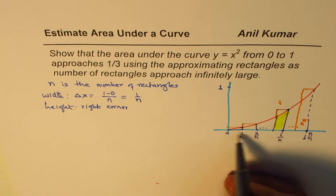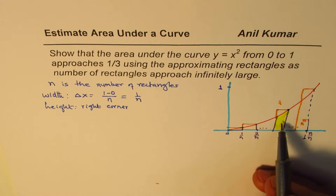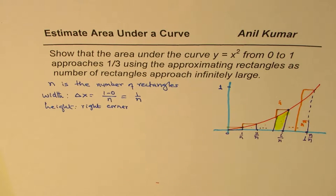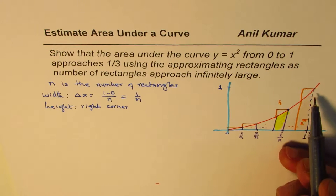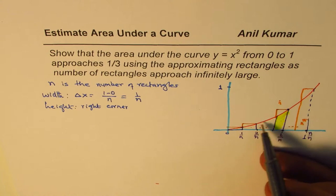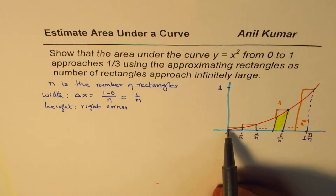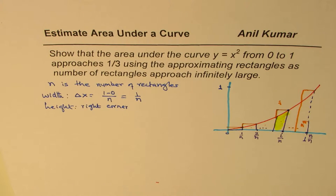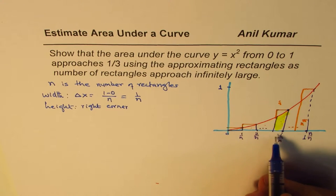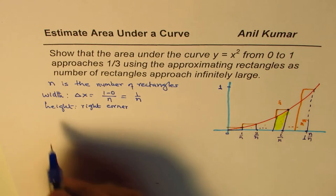So we have n rectangles here. Sum of areas of these n rectangles will give us an estimate of area under this graph of y equals x squared and the x axis. That's the whole idea. We have to show that if n is very large then this area is 1 over 3. That's the question. I hope the question is absolutely clear. You can actually pause the video and answer the question and then look into my suggestions.